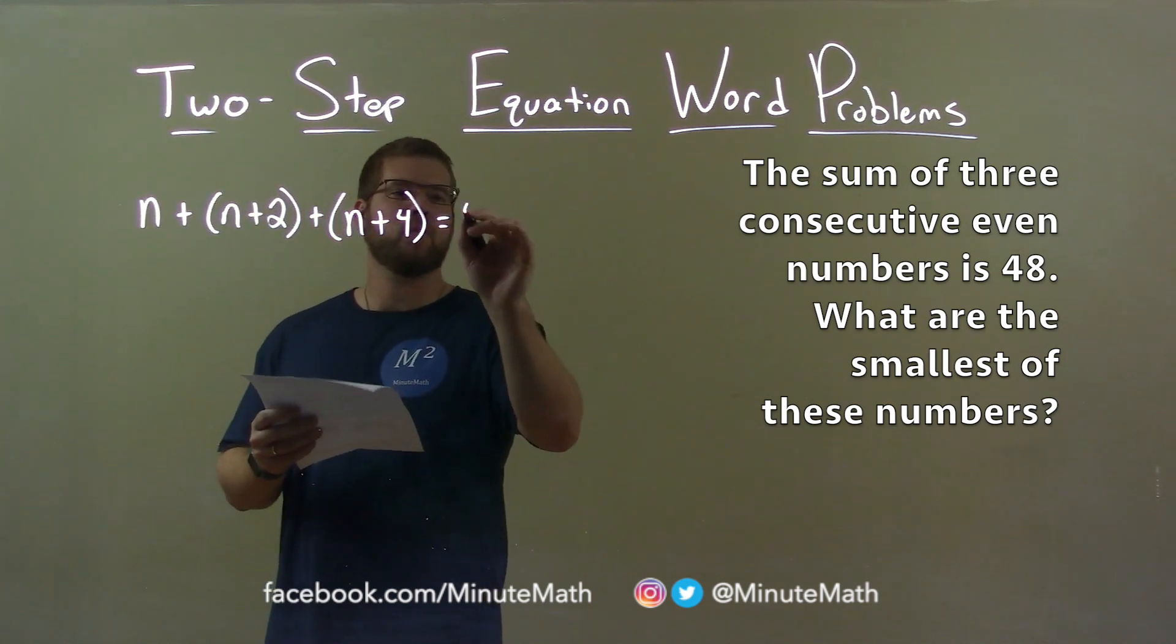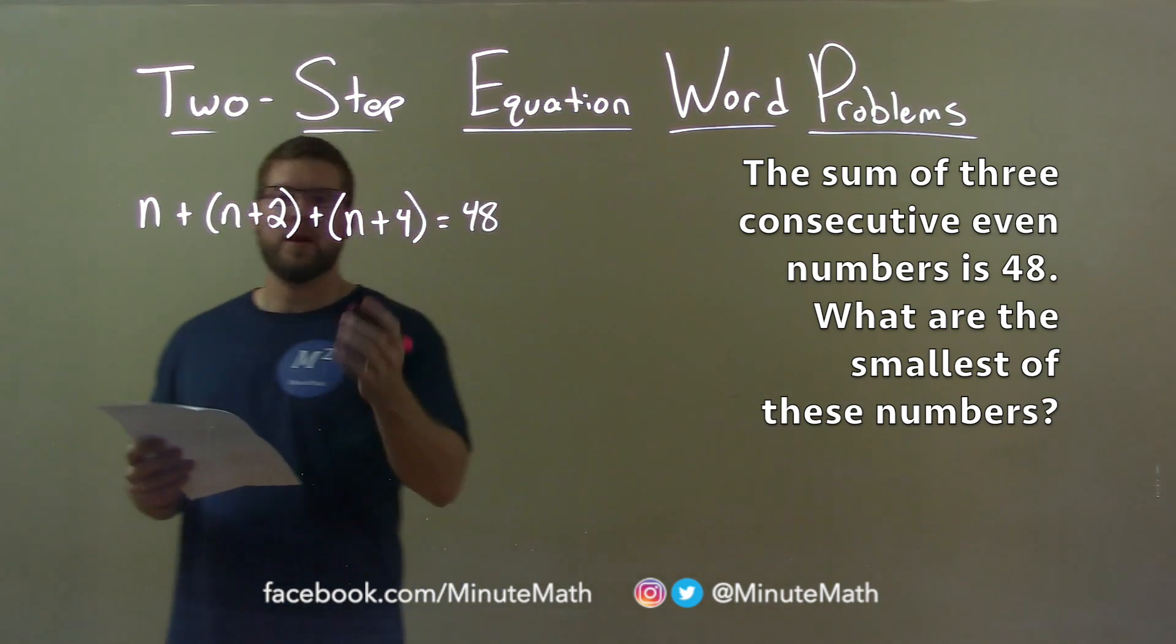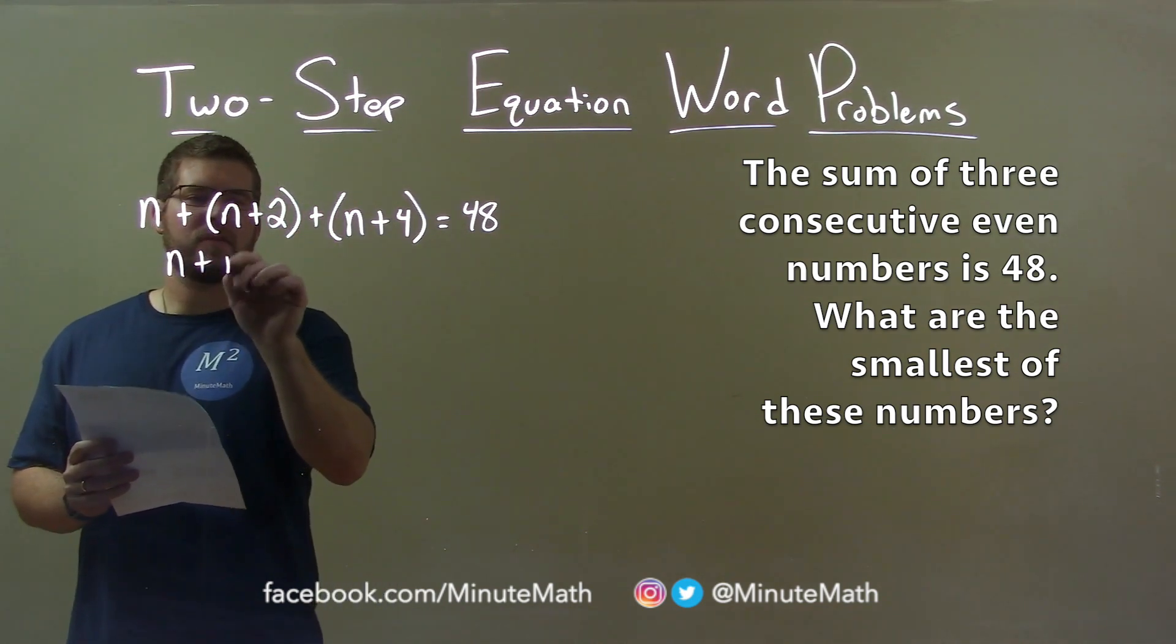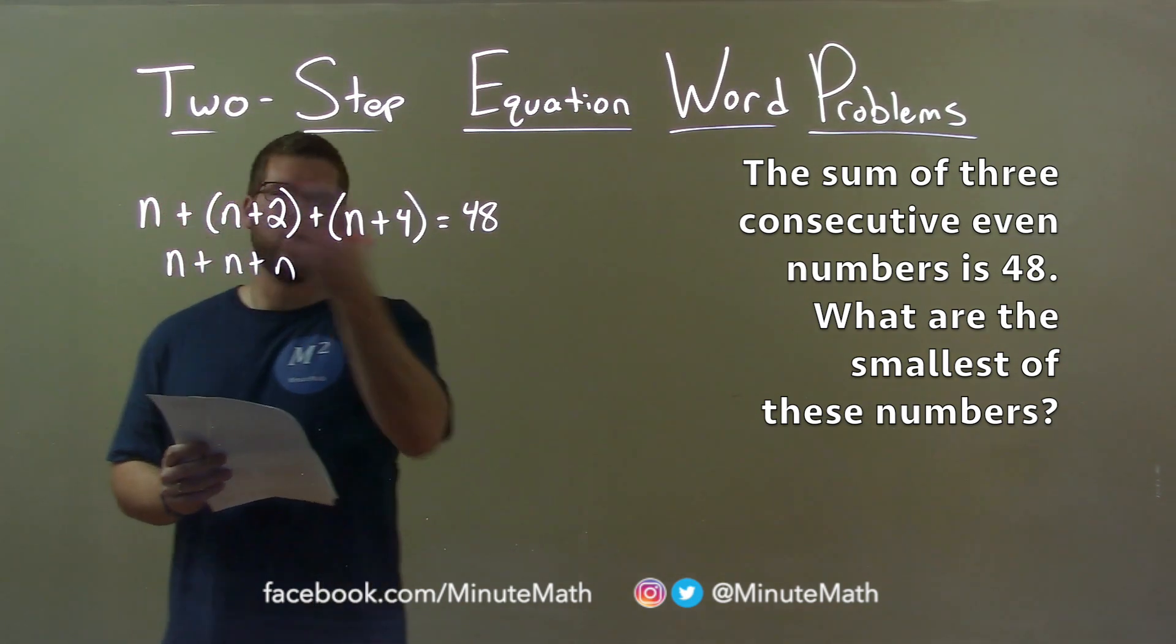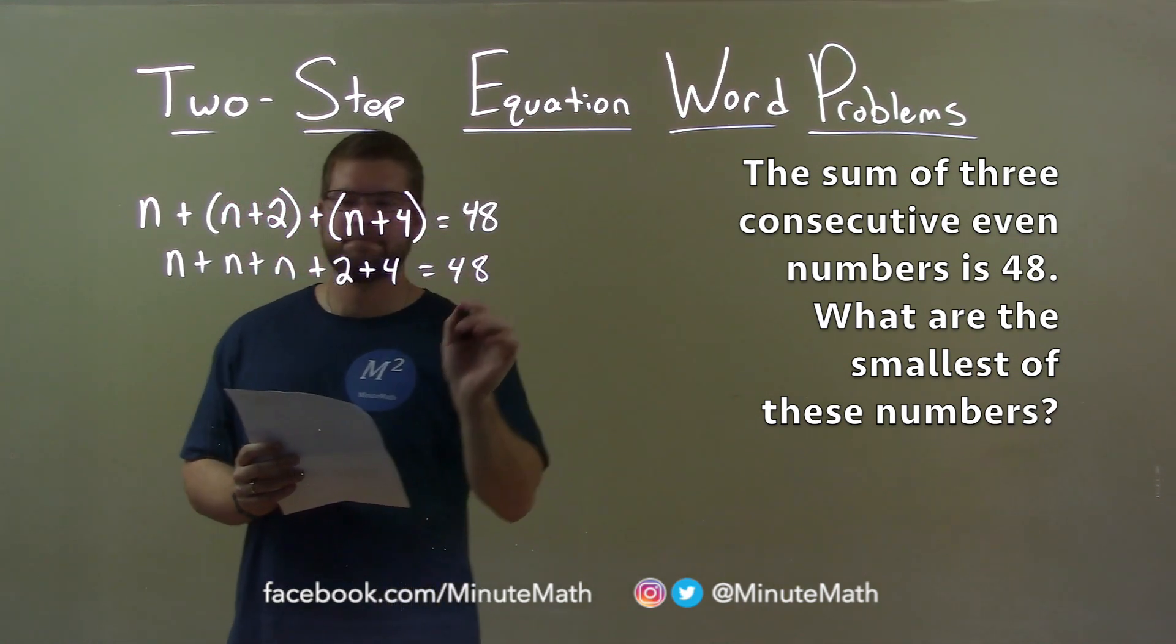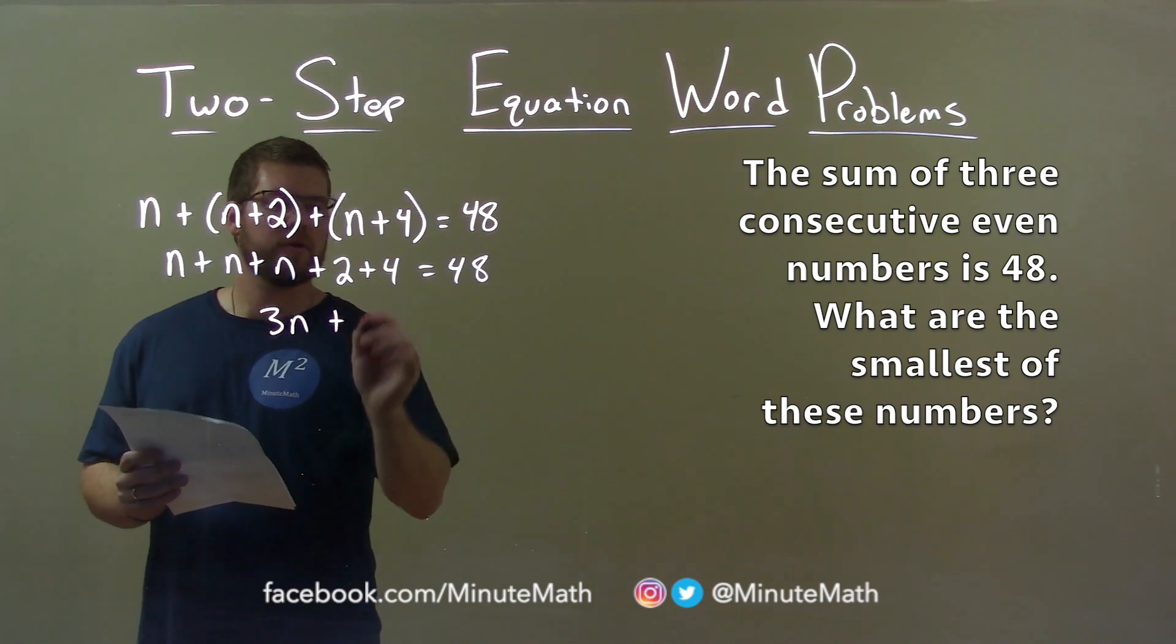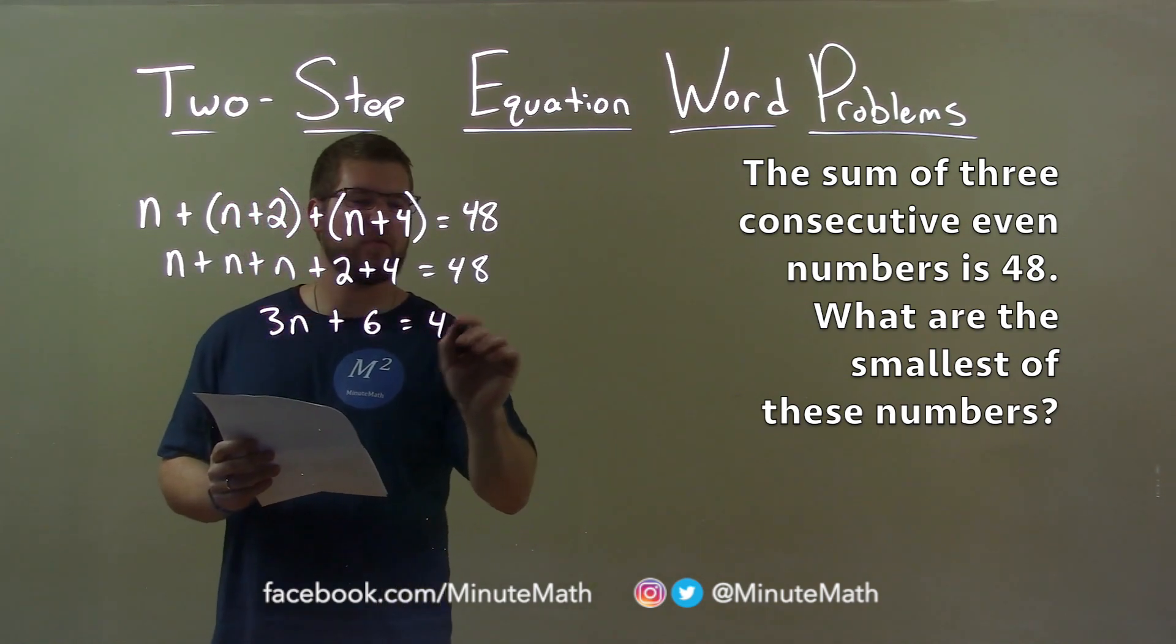And they said that is equal to 48. Now I have an equation, I just got to solve this. Rearrange this n plus n plus n. We can rearrange it because it's all addition here. And then we have plus 2 plus 4 equals 48. n plus n plus n is 3n. 2 plus 4 is 6 and that equals 48.